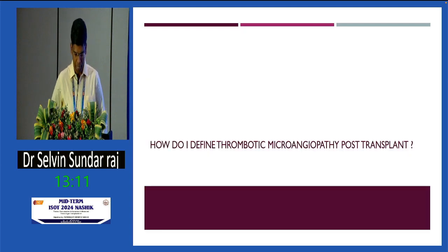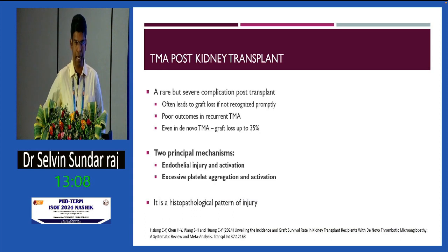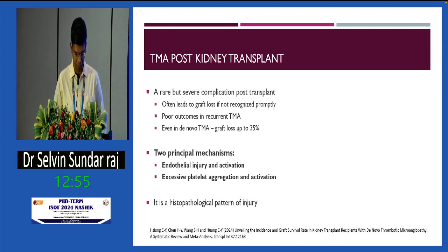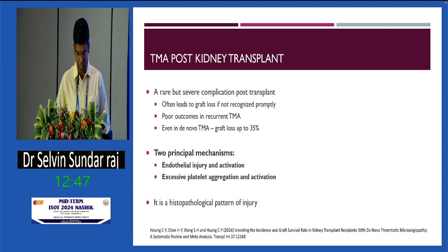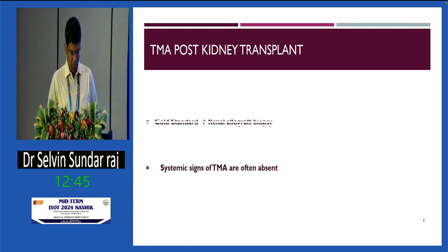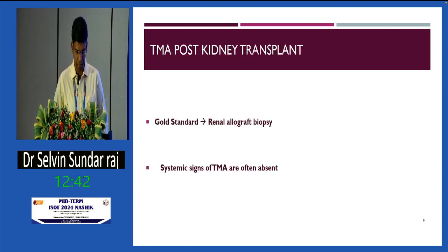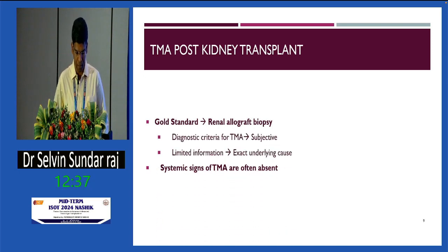The first question: how do I define thrombotic microangiopathy post-transplant? It is a rare but severe complication that often leads to graft loss if not recognized promptly. Poor outcomes are seen in recurrent TMA, and even in de novo TMA, graft loss can be up to 35%. The two principal mechanisms are endothelial injury and activation, and excessive platelet aggregation and activation. It is a histopathological term; the gold standard is kidney biopsy. Systemic signs of TMA may be absent, so biopsy is essential.